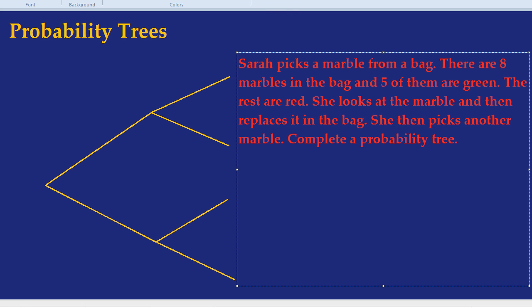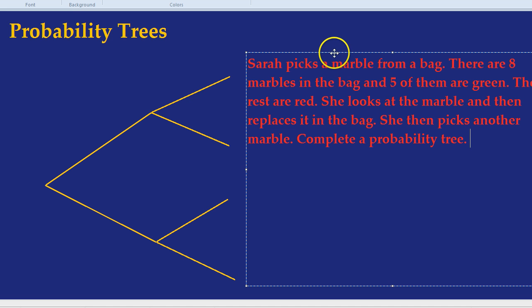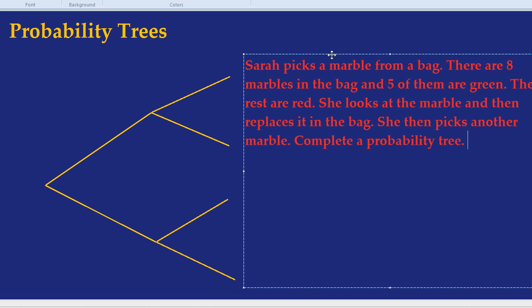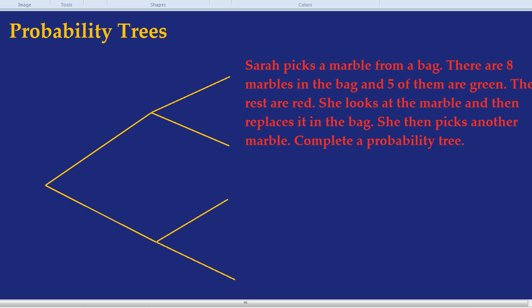Here we go. Here's our event that had two different possibilities: choosing a green marble and choosing a red marble. There are only two different branches at each split. Let's label our probability tree. I'm going to label the branch going up as green.